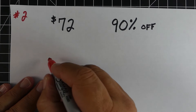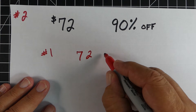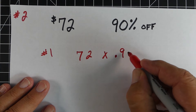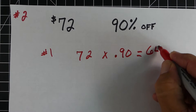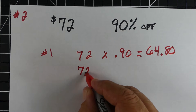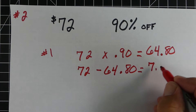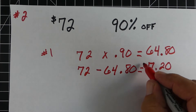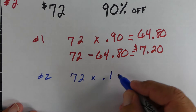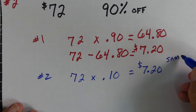Example 2: a $72 item, 90% off — a pretty good deal. Method 1: take 72 times 0.9, which gives us $64.80 — that's the amount we're saving. Then 72 minus 64.80 gives us $7.20, our sale cost. Method 2: take 72 times 0.1, which also gives us $7.20 — how much we're going to pay. Both methods give the same amount.